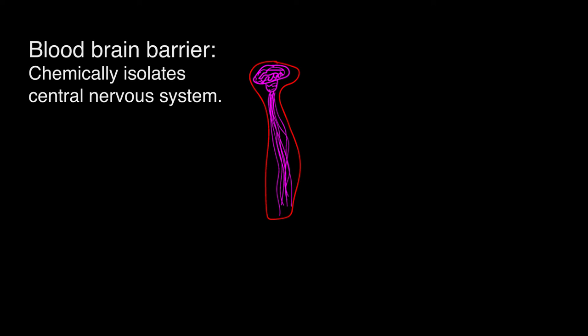As we will learn, neurons are highly sensitive, and the blood-brain barrier is critical to ensuring that the environment around neurons is consistent. Without the blood-brain barrier, neural communication would be seriously disrupted.